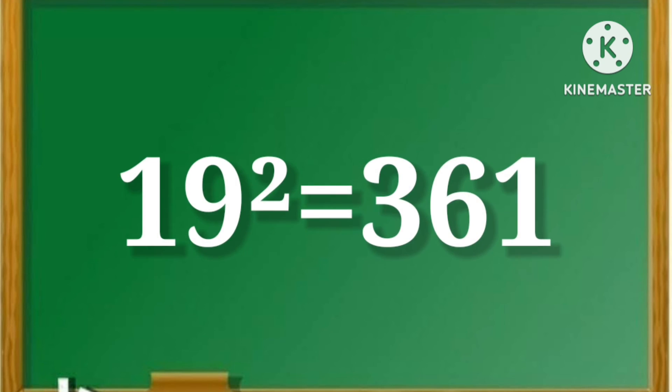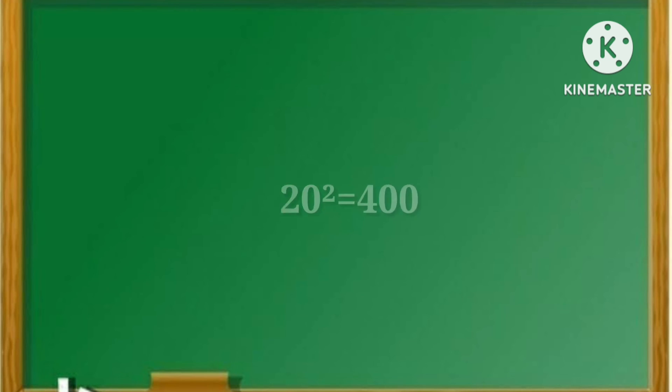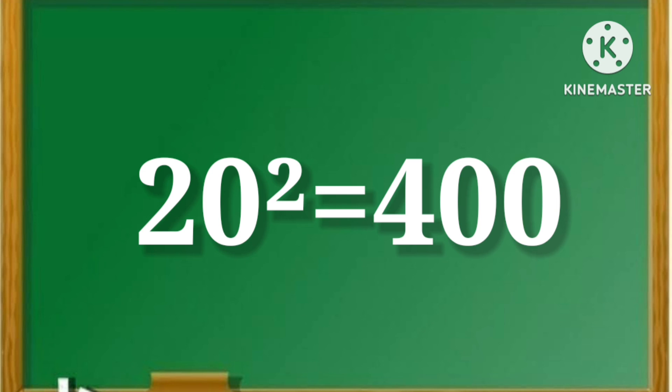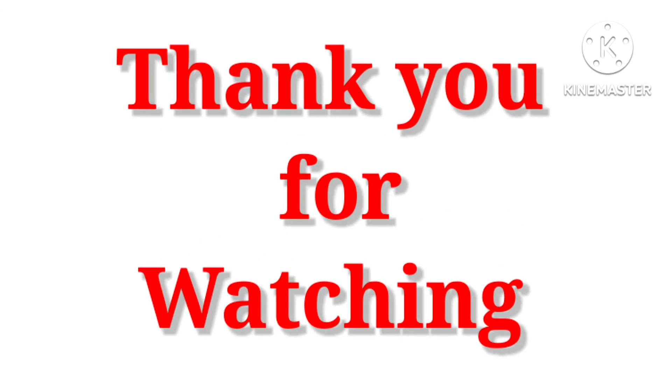19 square is equal to 361. 20 square is equal to 400. Thank you for watching.